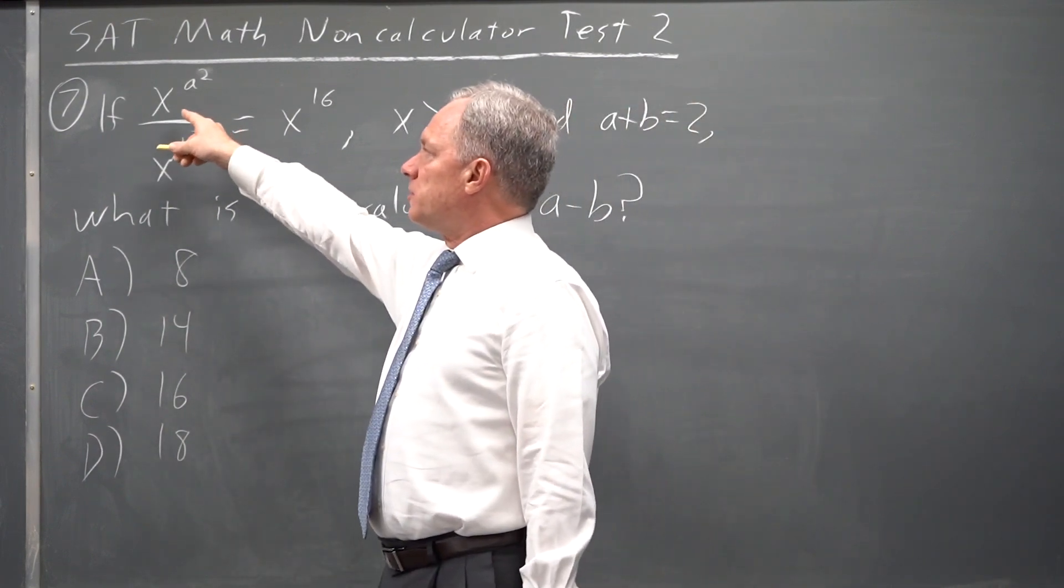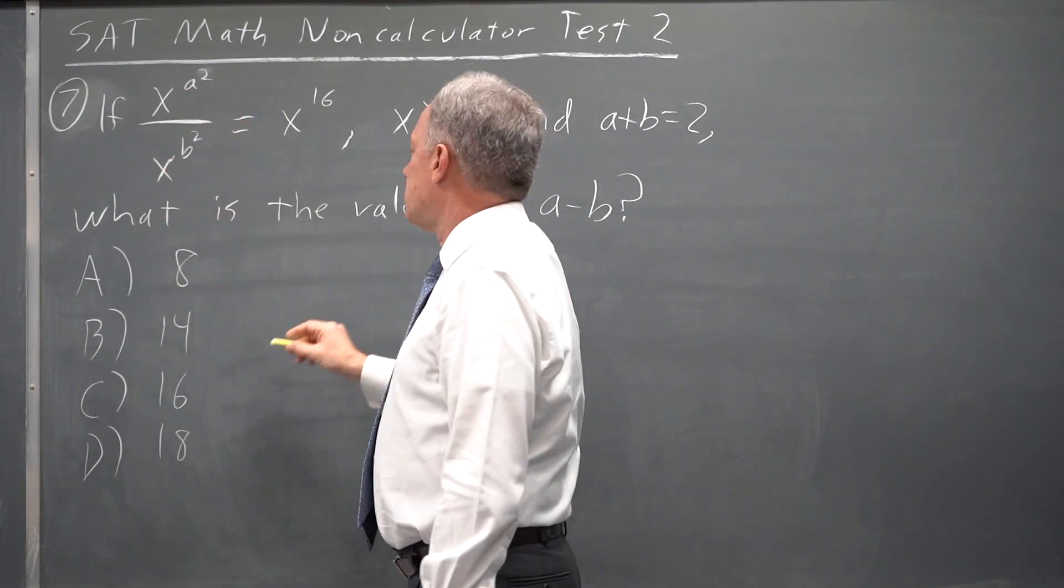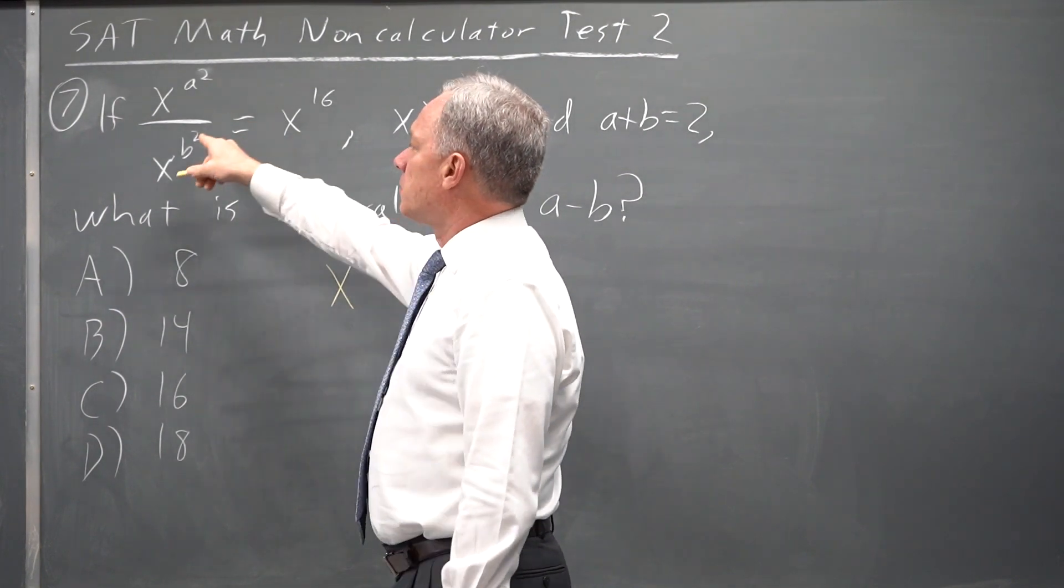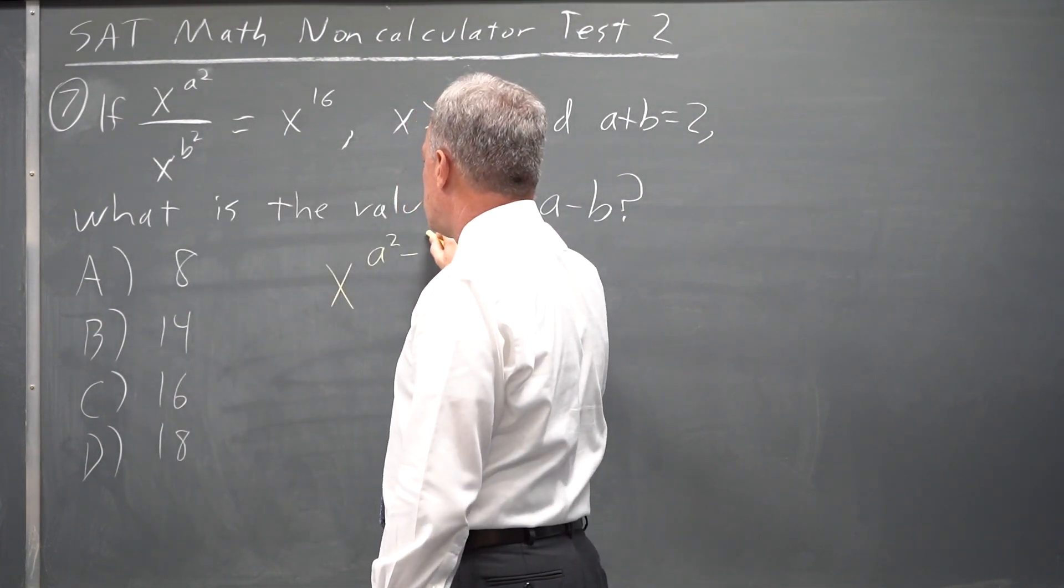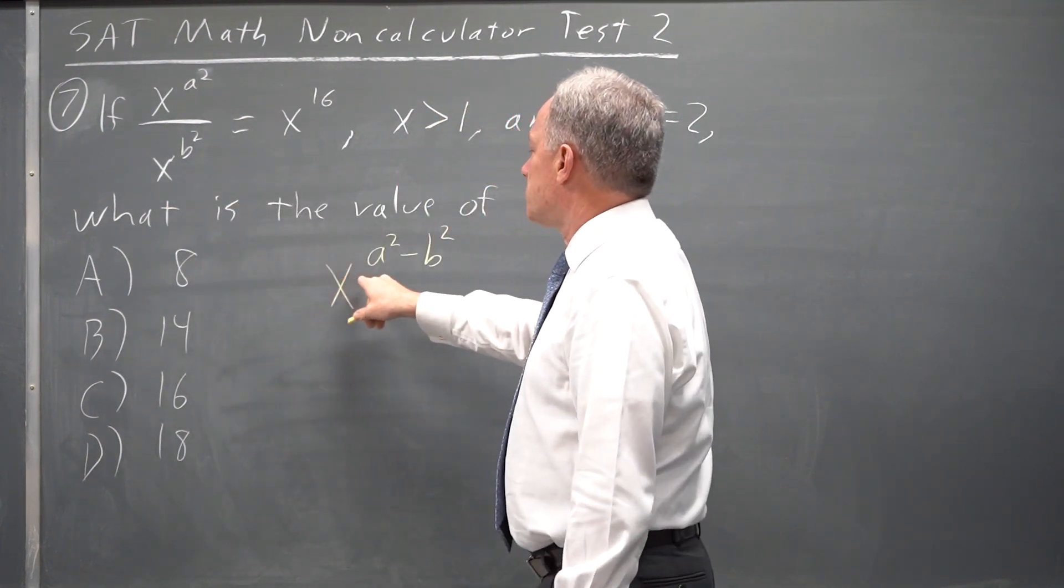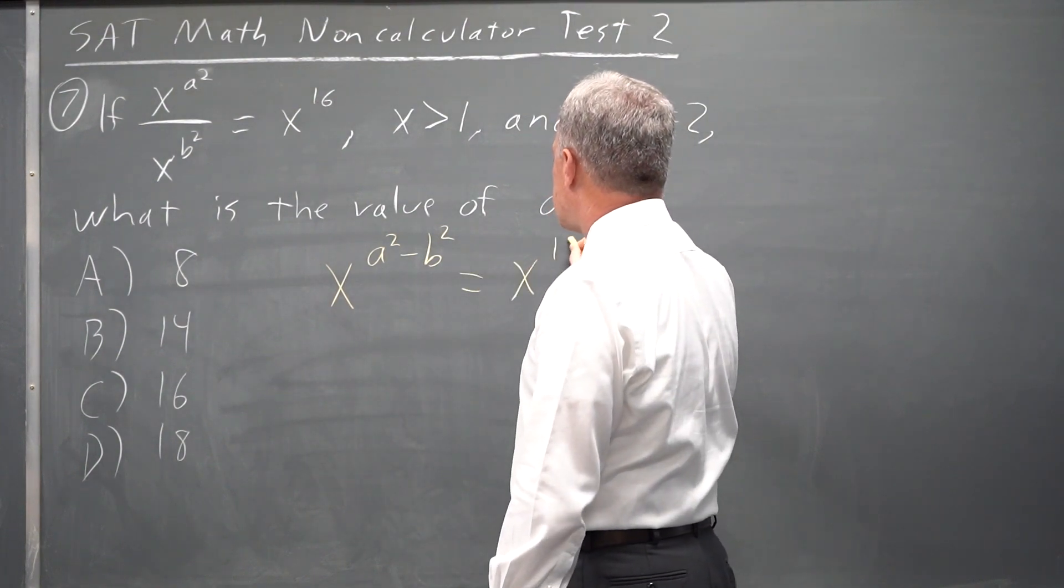One of our exponent rules is a fraction with powers of the same base, you take the exponent in the numerator minus the exponent in the denominator. So x to the a squared over x to the b squared equals x to the a squared minus b squared. And that's equal to x to the 16.